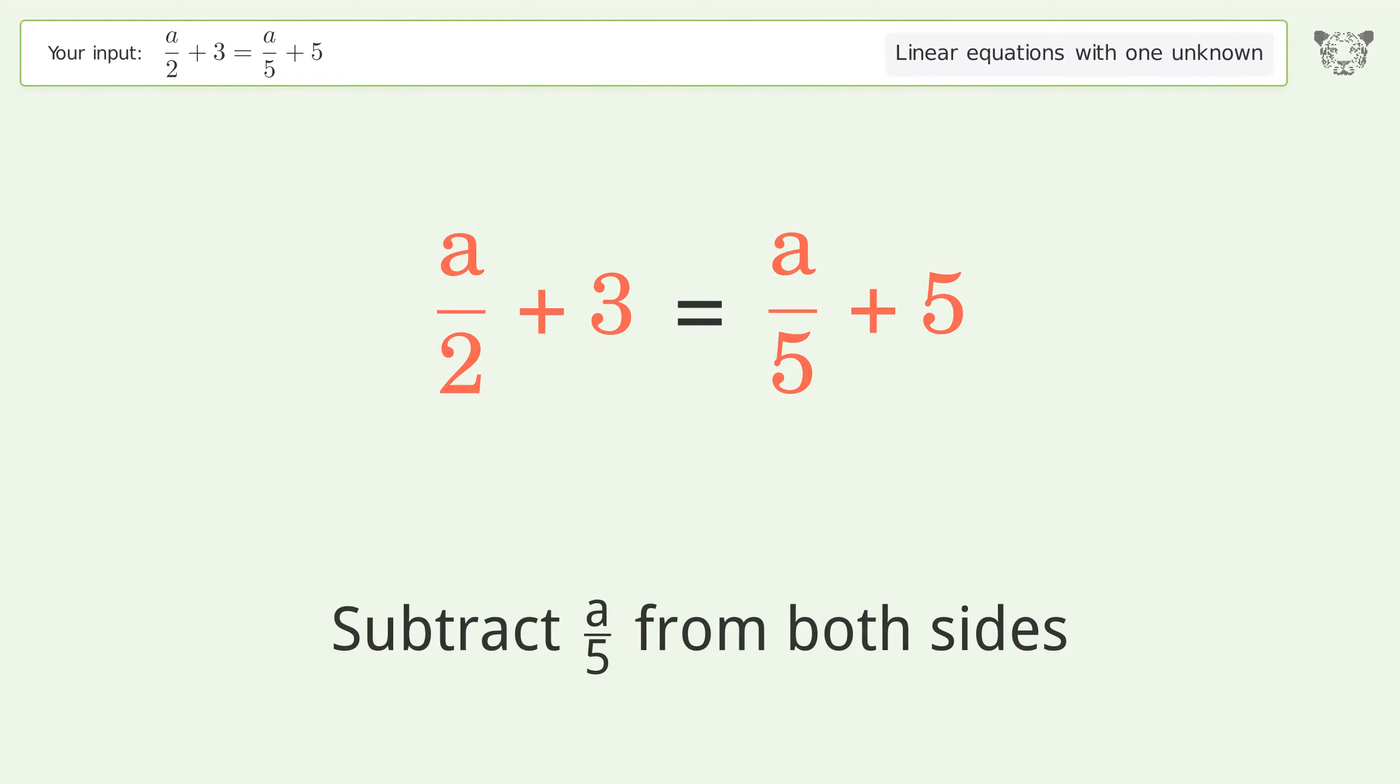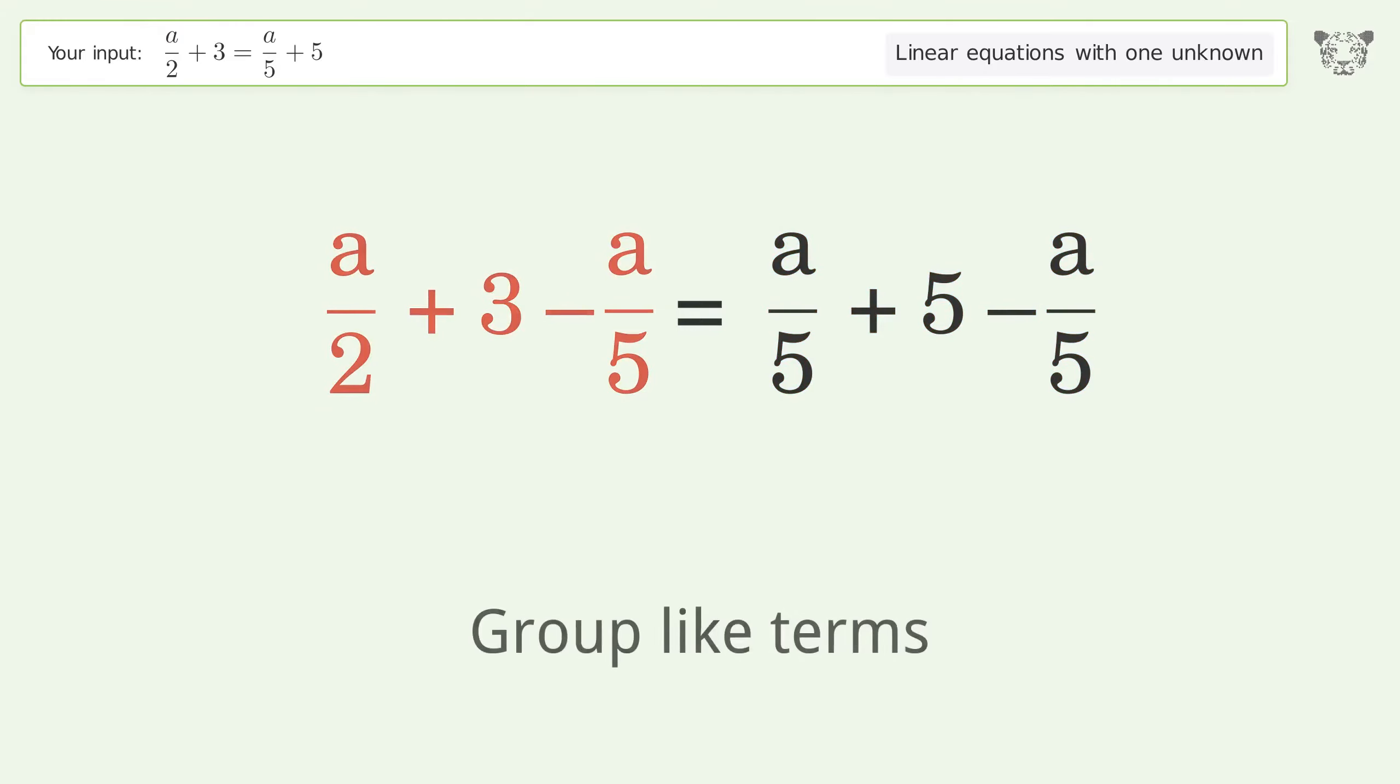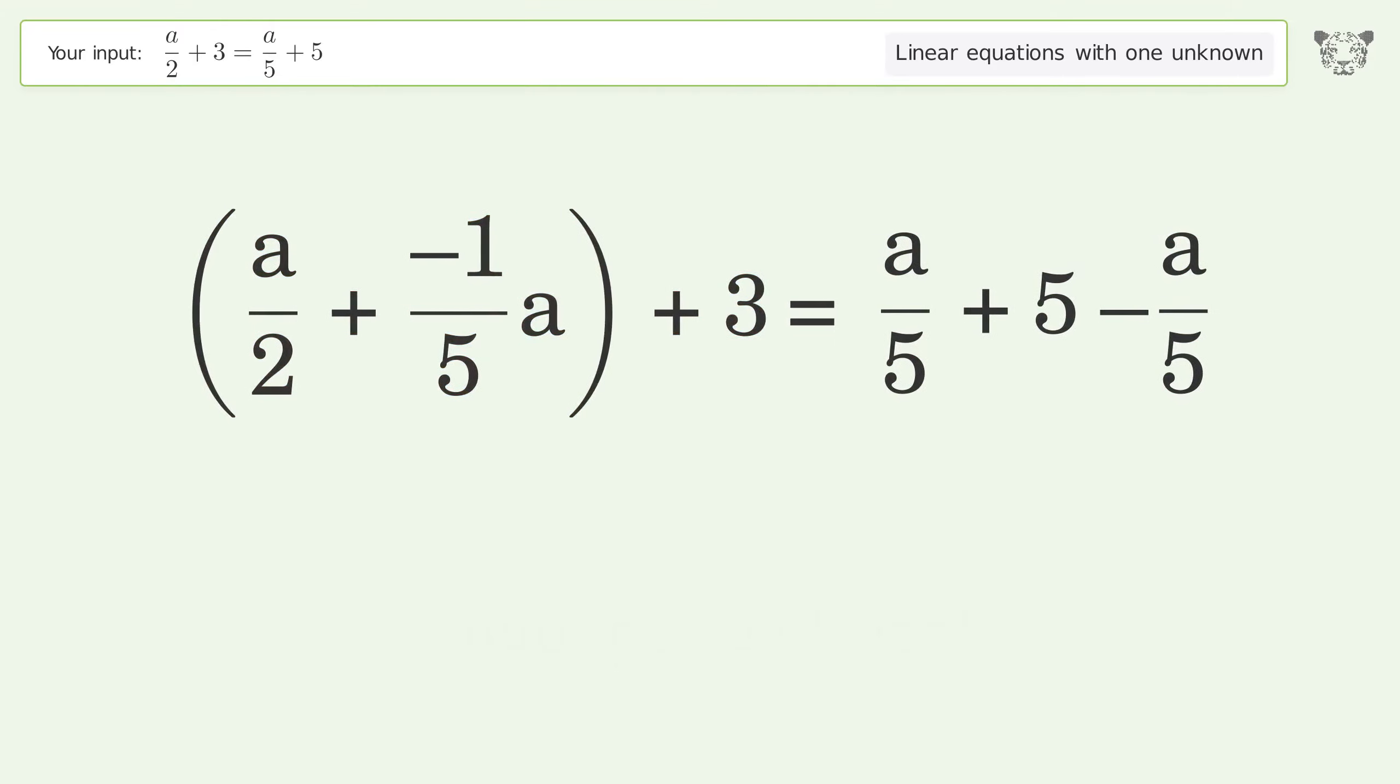Subtract a over 5 from both sides. Group like terms. Group the coefficients.